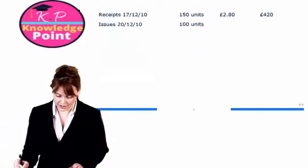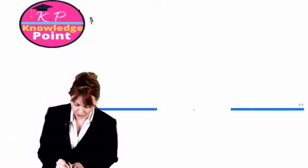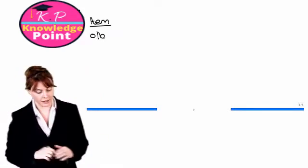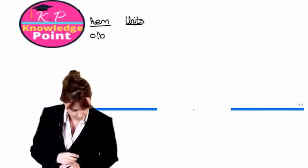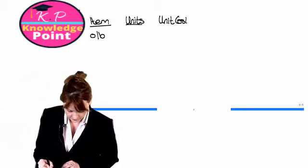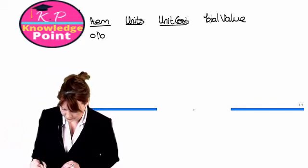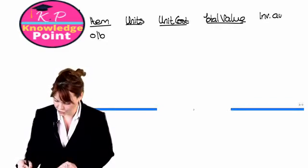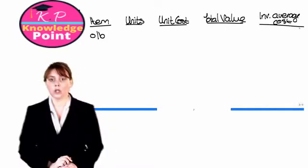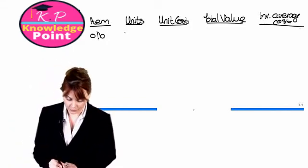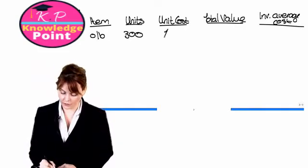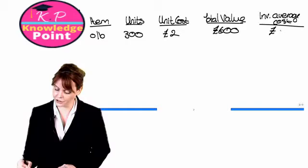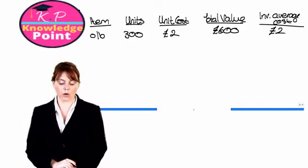Under the weighted average method, our table will have a column for the item, starting with our opening balance, followed by receipts and issues during the period, then columns for number of units, unit cost, total value, and inventory average cost. Beginning with our opening inventory, we are told this is 300 units with a value of 2 pounds each, giving a total value of 600 pounds. No calculations necessary — our average cost per unit is 2 pounds.